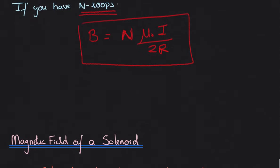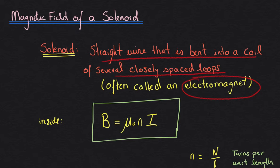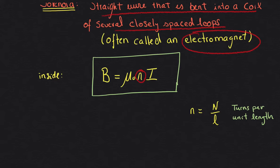The magnetic field of a solenoid: using this idea, we can create a solenoid, which is simply a straight wire bent into a coil with several closely spaced loops — what we call an electromagnet. The solenoid equation is B = μ₀nI, where lowercase n is the turns per unit length: the number of turns divided by the length. We use this equation for the last question in the lecture worksheet.